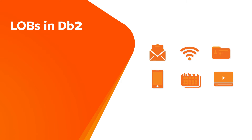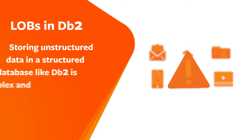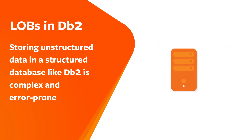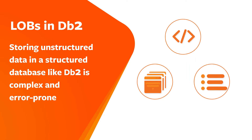LOBs are a different animal, and things can go wrong with them. Storing unstructured data in a structured database like DB2 is complex and error-prone. LOBs are stored and not often used. They have pointers between tables, indexes, and data sets that can break.